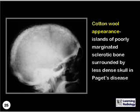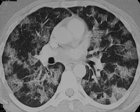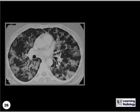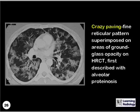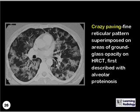What is the name of this appearance? This is crazy paving, a fine reticular pattern superimposed on areas of ground glass opacity seen on high-resolution CT of the chest, first described with alveolar proteinosis, although it is seen with other diseases.